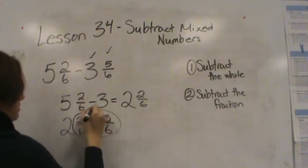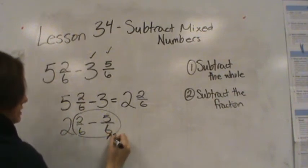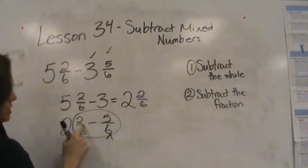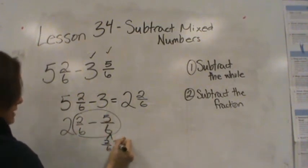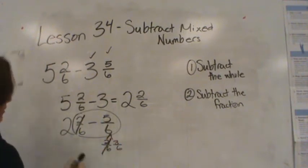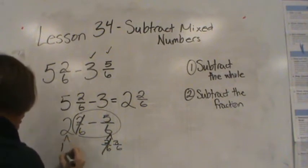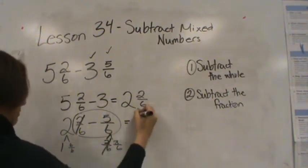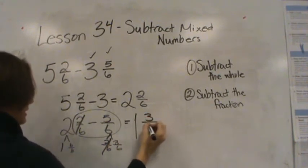I know I'm going to have to regroup because 5/6 is bigger than 2/6, so I'm going to decompose 5/6 into 2/6 and what else gets me to 5/6 — that's 3/6. 2/6 minus 2/6 is nothing. So now I need to regroup this 2. I'm going to have 1 and 6/6. 1 becomes my whole, and 6/6 minus 3/6 is 3/6.